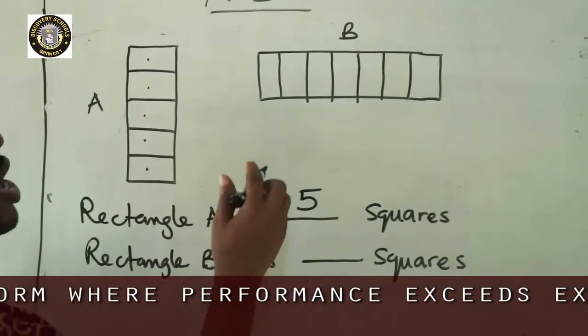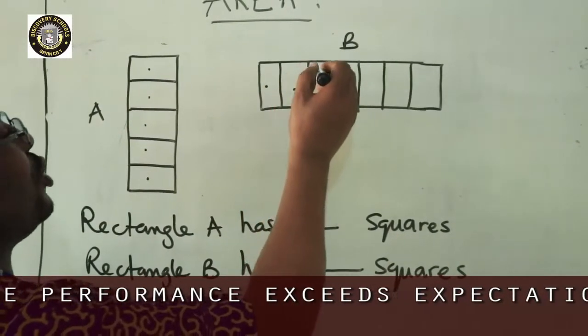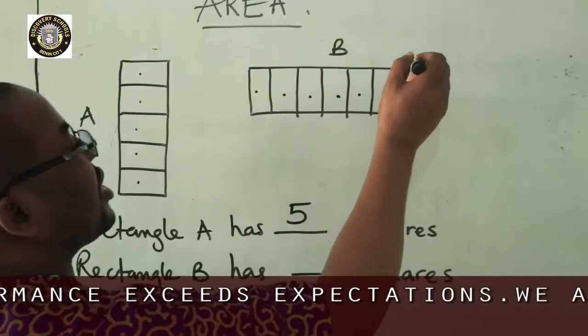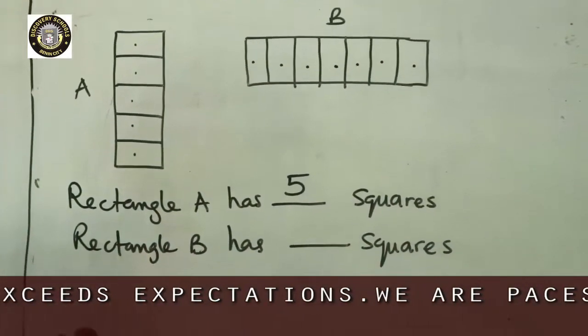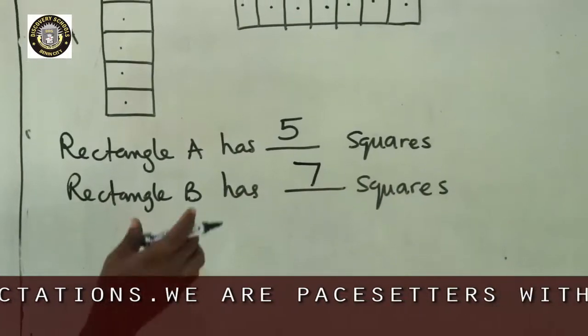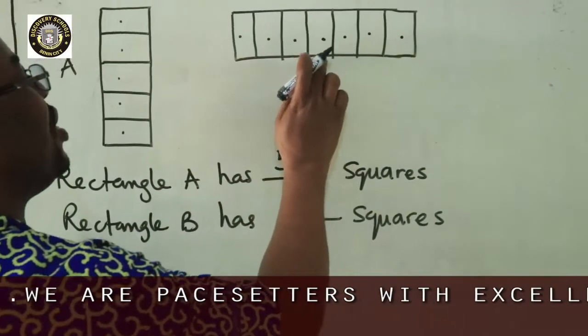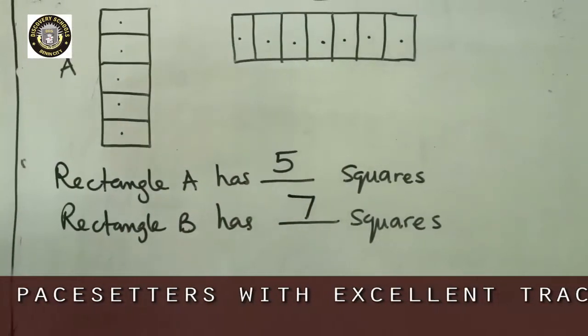Rectangle B has how many squares? Let's count. 1, 2, 3, 4, 5, 6, 7. Rectangle B has 7 squares. Therefore, the area of rectangle B is what? 7 squares.